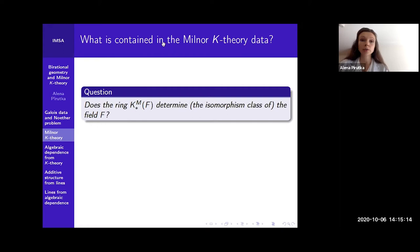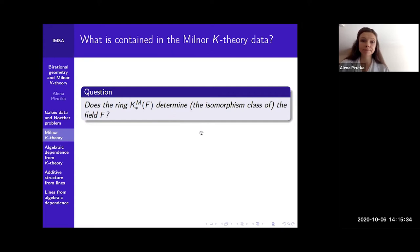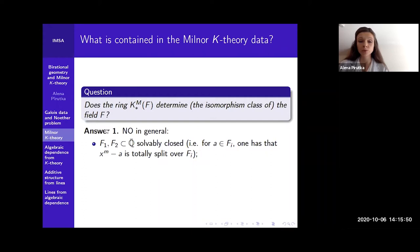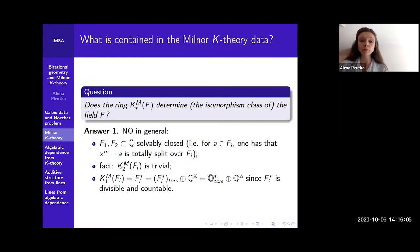We will be interested in the following question: what can be reconstructed from the data of the Milner K-ring? In other words, we'd like to know if the Milner K-ring determines the isomorphism class of a field F. The first answer is no in general. In particular, if you take two solvably closed subfields of an algebraic closure of Q — meaning I have M-th roots of elements in those fields — then one can prove that K2 Milner is trivial, so we only need to look at K1. In this case K1 decomposes as a torsion subgroup and Q over Z, so K1 for those two fields has the same structure yet the fields are not necessarily isomorphic.